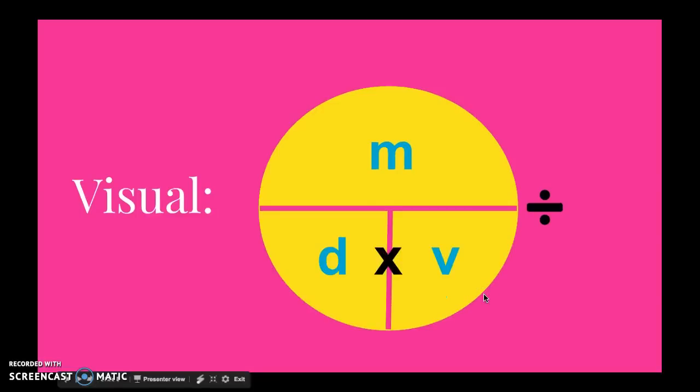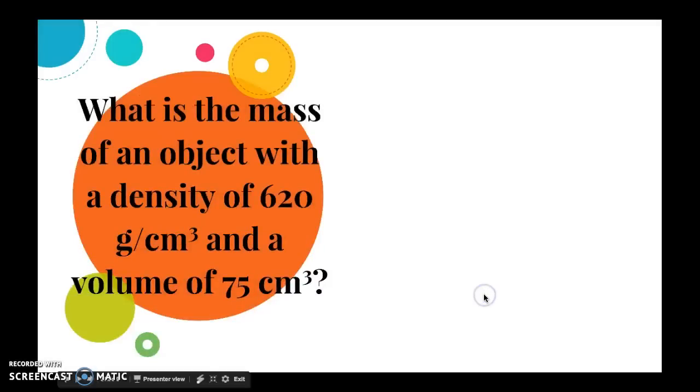So here's the visual once again. And the next problem says, what is the mass of an object with a density of 620 grams per cubic centimeter and a volume of 75 cubic centimeters? If this problem said volume of 75 milliliters, we could still do it because a cubic centimeter and a milliliter are the exact same thing.